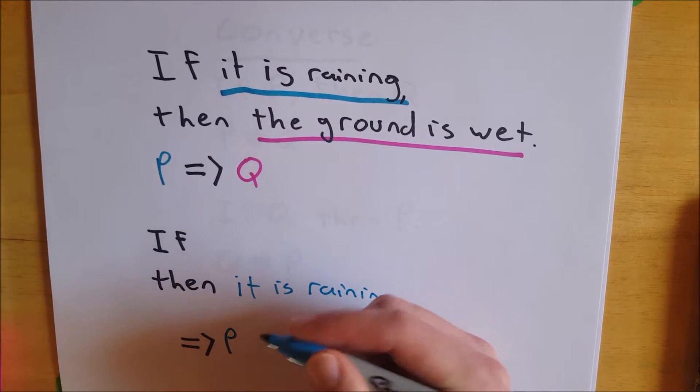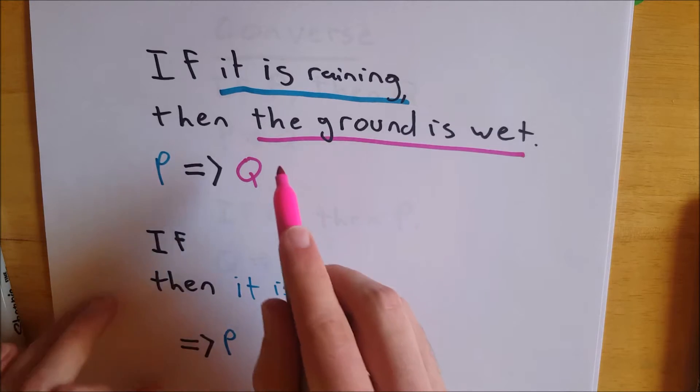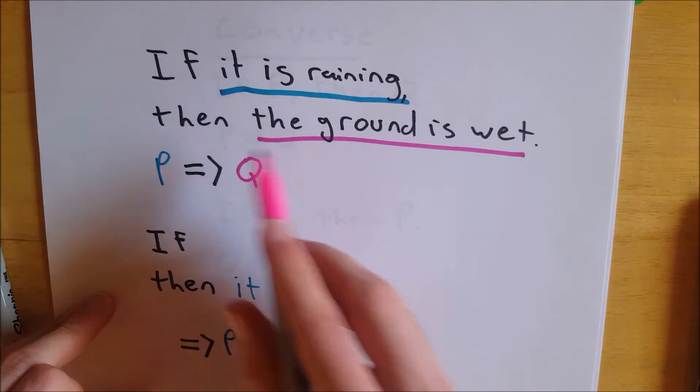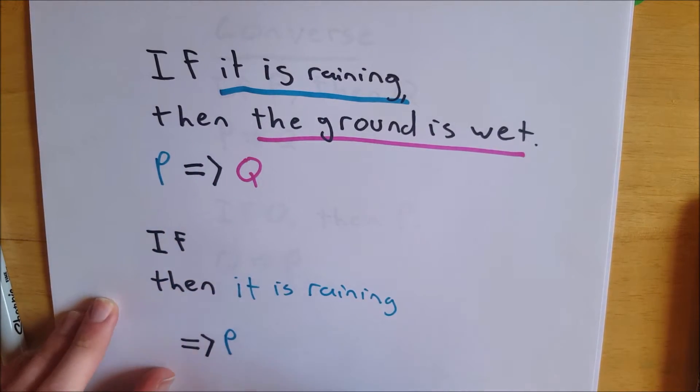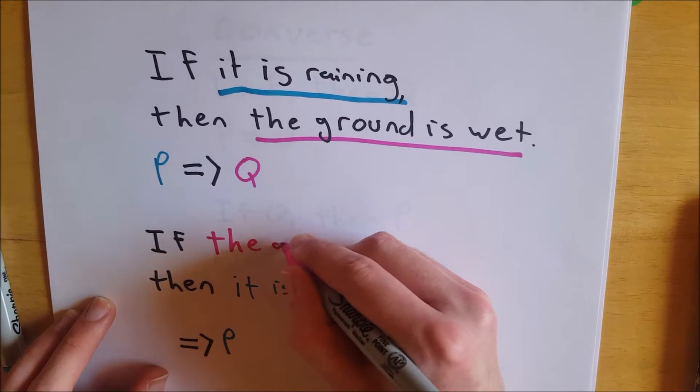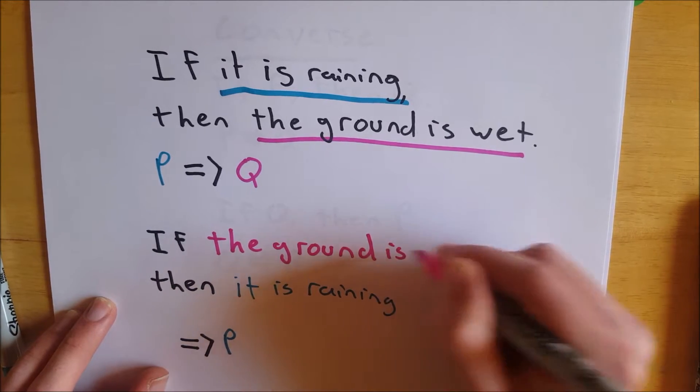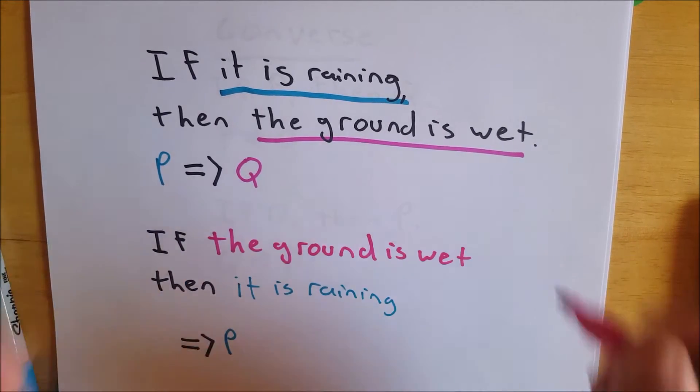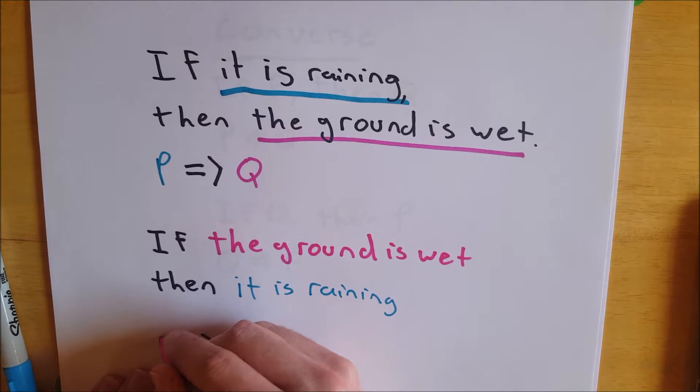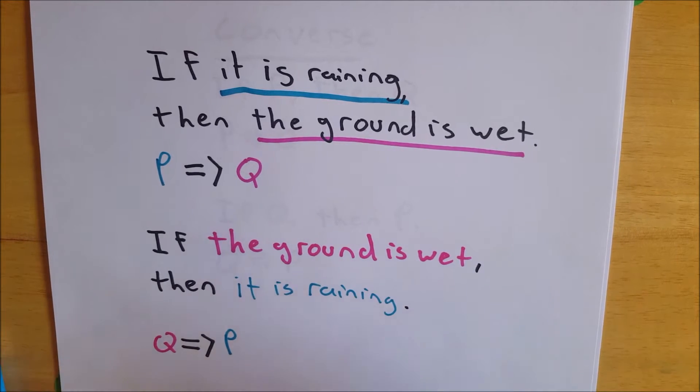And that's over here, implied by Q, which remember is pink, the ground is wet. That was the then part, now it's going to become the if part. So if the ground is wet, then it is raining. So that's Q implies P. If the ground is wet, then it is raining.